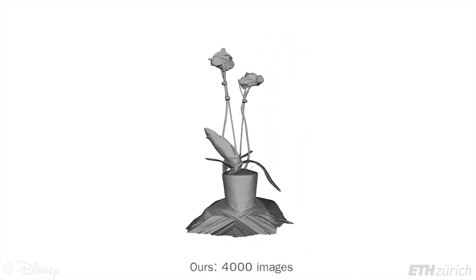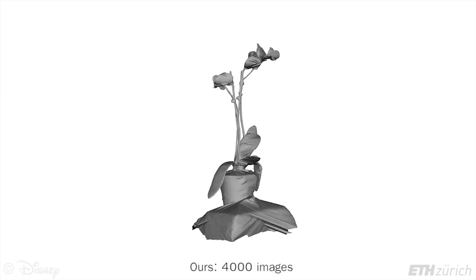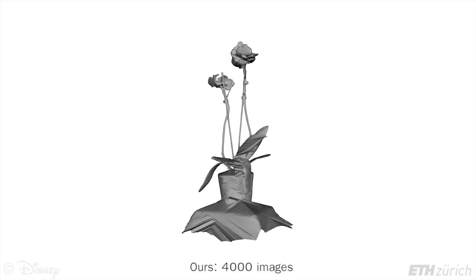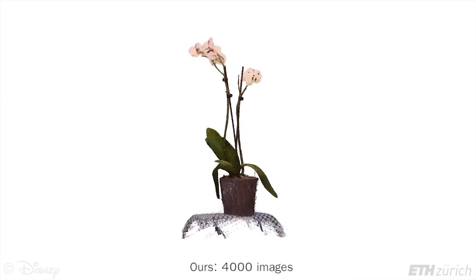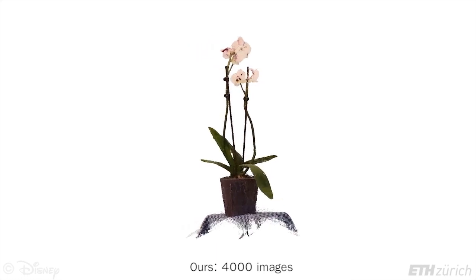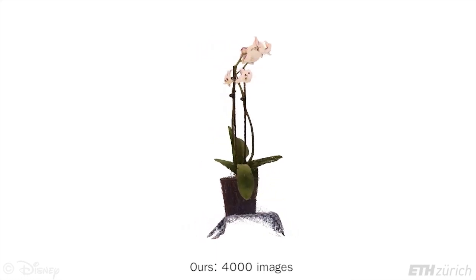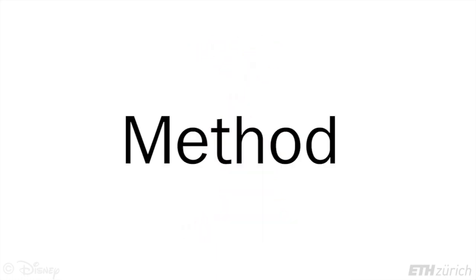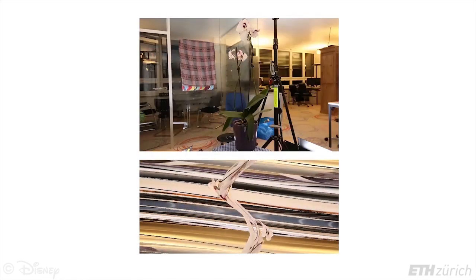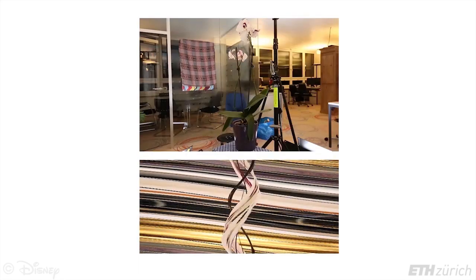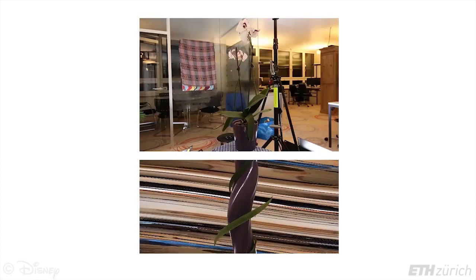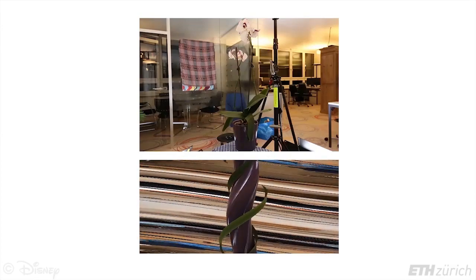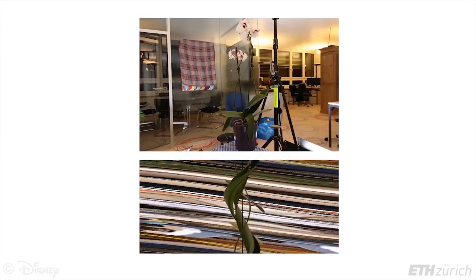Conversely, we explicitly account for this in our approach and compute 3D object segmentations using efficient and scalable steps. Our method takes advantage of local structures that arise in densely sampled light field data. We first compute an initial rough, depth-based segmentation using local gradient features in the epipolar volume.